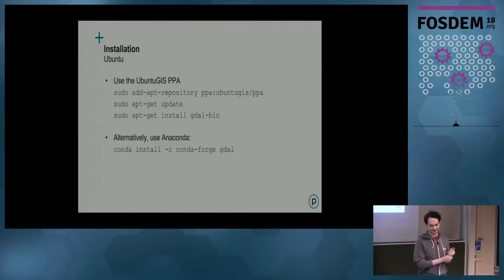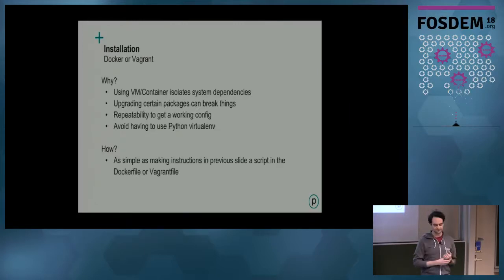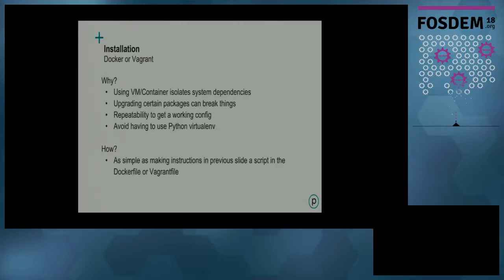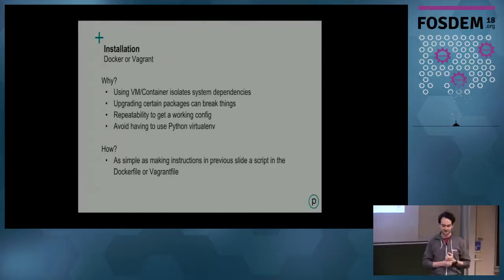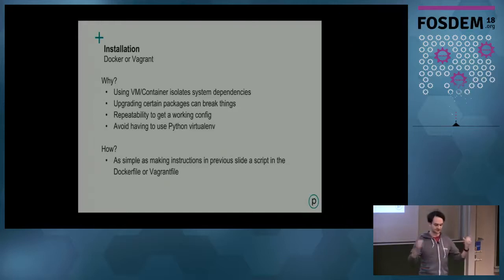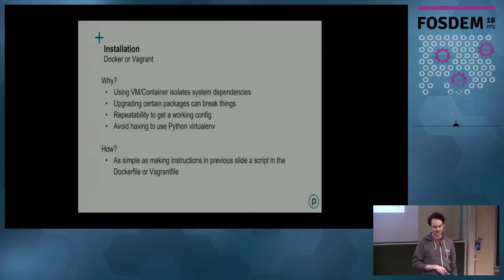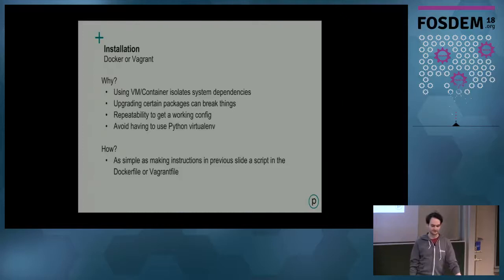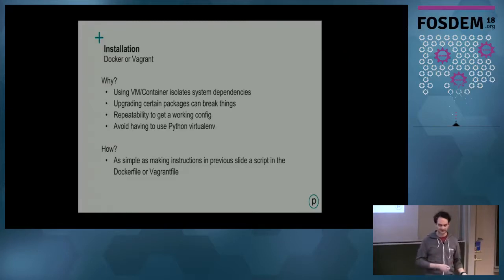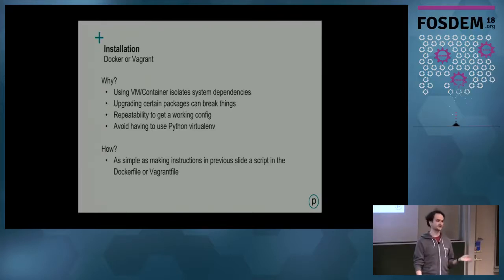I don't really recommend doing either of those because you get a lot of dependency problems. We use a lot of VMs and containers to isolate all the system dependencies, basically making it so you can just rebuild the whole system and get back to a working configuration. You don't have to worry about upgrading something for another package and breaking your GDAL installation. It also lets you avoid Python virtual environment problems when trying to use multiple versions of GDAL. You can put the setup instructions in a Dockerfile or Vagrantfile, or use an existing setup and build up from there.